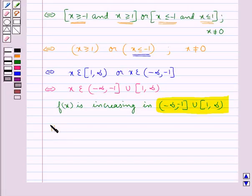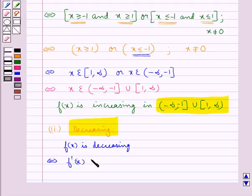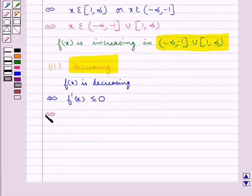Now let's find the interval in which the function f(x) is decreasing. We know that a function f(x) is decreasing if and only if f'(x) ≤ 0. This means 3x² − 3/x⁴ ≤ 0, where x is not equal to 0.